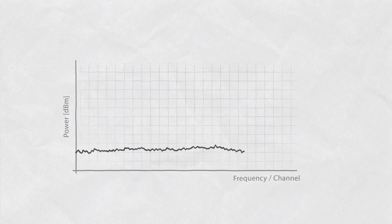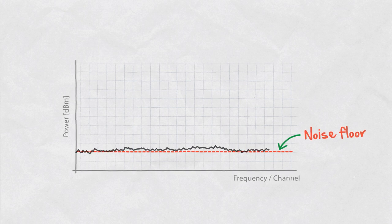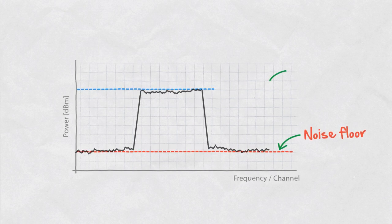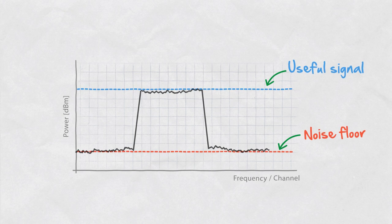In lab conditions, the noise floor is the jittery line at the bottom of the spectrum the radio works with. The useful signal is recognized by clearly higher level above the noise floor.